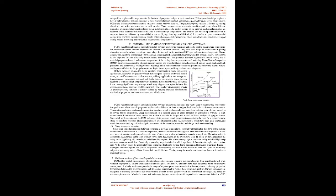FGMs have wide scope of applications in joining dissimilar materials such as ceramics to super-alloys for thermal barrier coatings (TBC), gas turbines, turbochargers, etc. Plasma-diverter designs of the International Thermonuclear Experimental Reactors (ITER) employ tungsten-copper alloy FG components to face high heat flux and efficiently transfer heat to a cooling base. The gradation alleviates high thermal stresses arising due to material property mismatch and reduces temperature of the cooling base to prevent thermal softening. Metal matrix composites (MMC) have been considered to fabricate pressure vessels and propellant tanks, providing strength against tensile loading at high pressures and compressive loading without buckling.